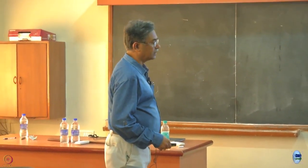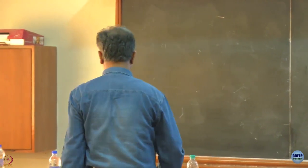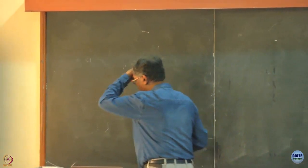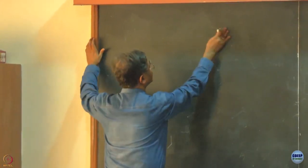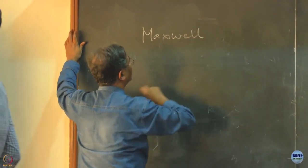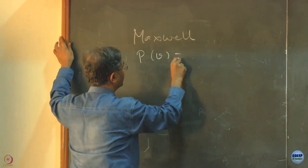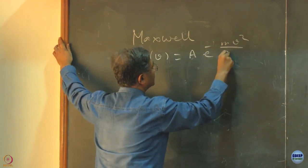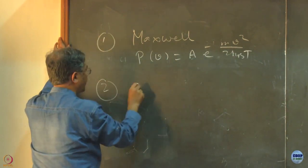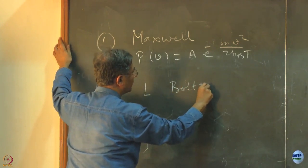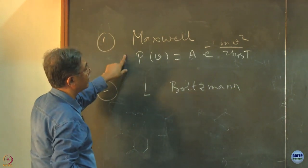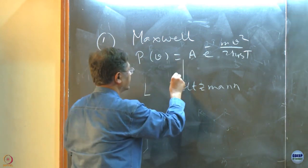Then we will go to Ising model, which I think is the first and perhaps the only solvable model of interacting systems. One must know the Ising model. Now, I will briefly tell the hierarchy, the chronology of how things happened in statistical mechanics. It started with Maxwell, who derived the velocity distribution. That was the first step.